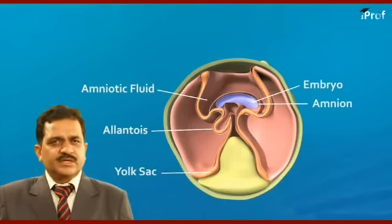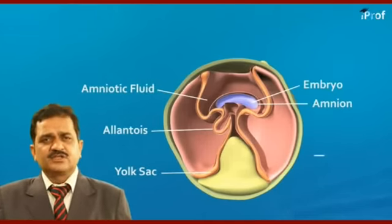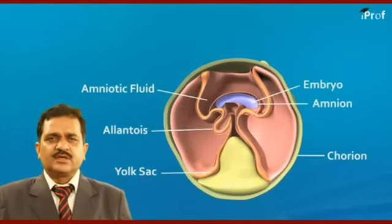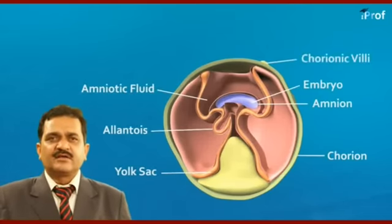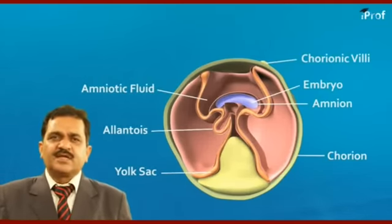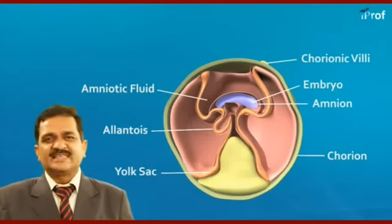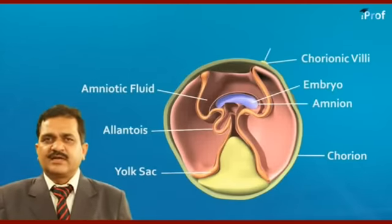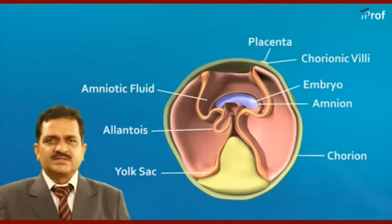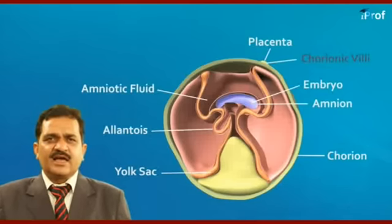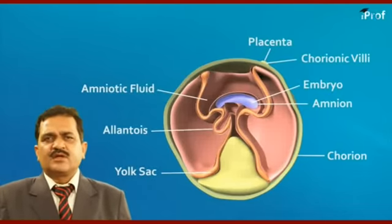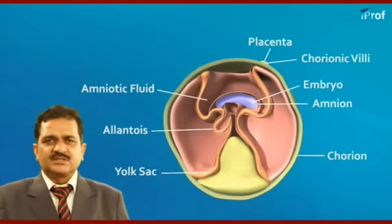The outermost layer of the extra-embryonic membranes is called the chorion. In the upper part of the chorion, finger-like projections called chorionic villi are present. After implantation, this layer is called the decidua, and thus the placenta of mammals including human beings is called the decidua placenta. The chorionic villi are embedded into the endometrium of the uterus to form the placenta.